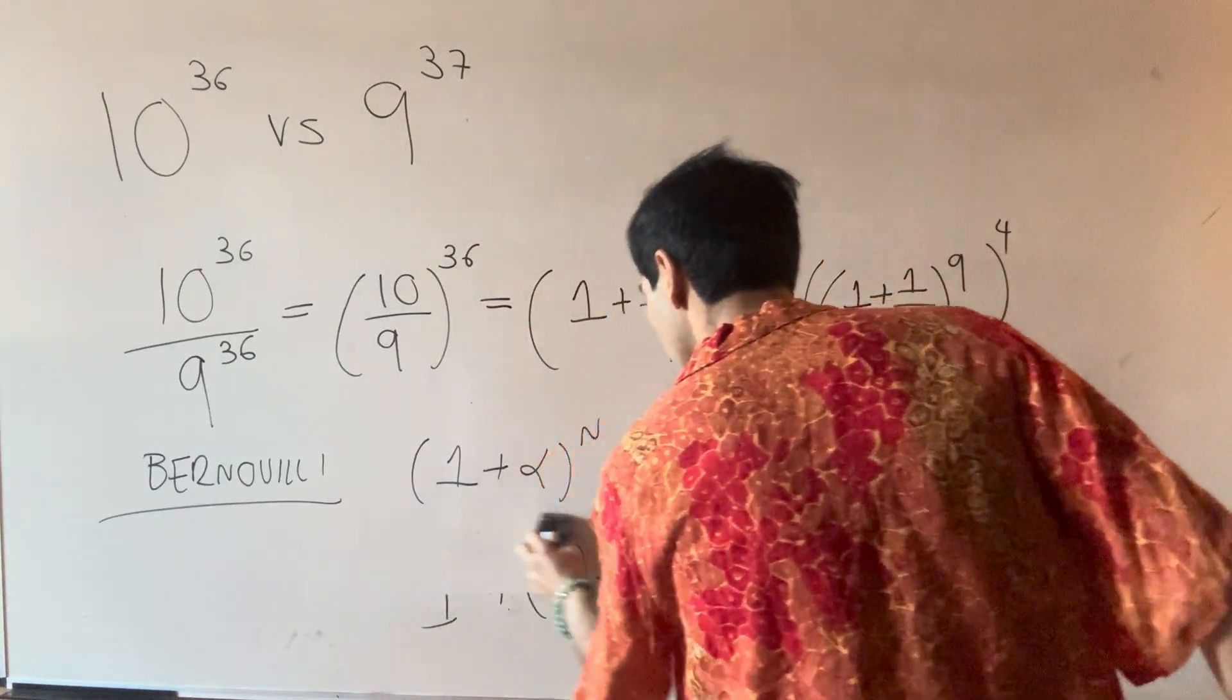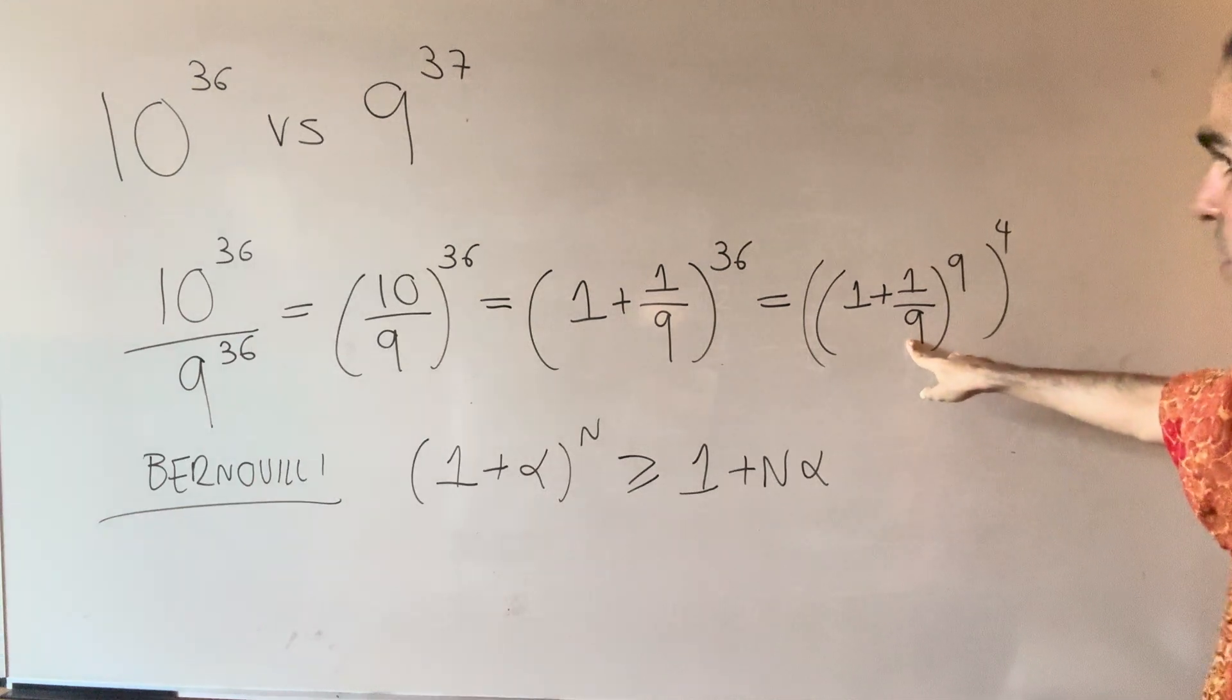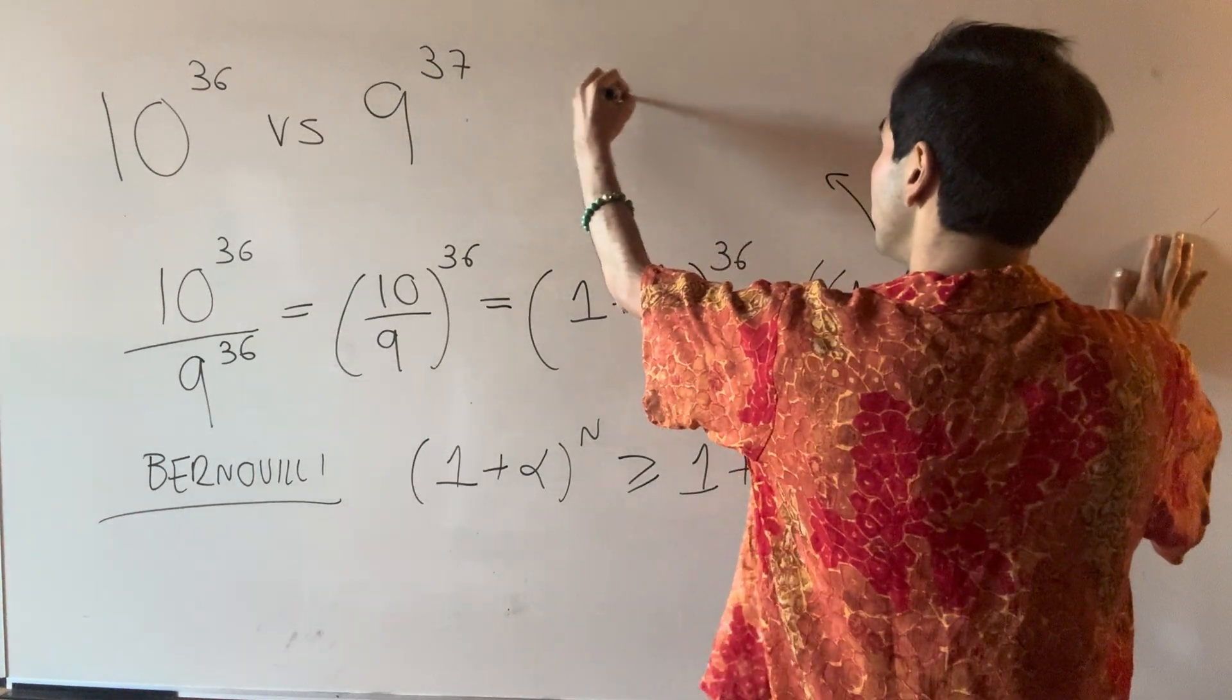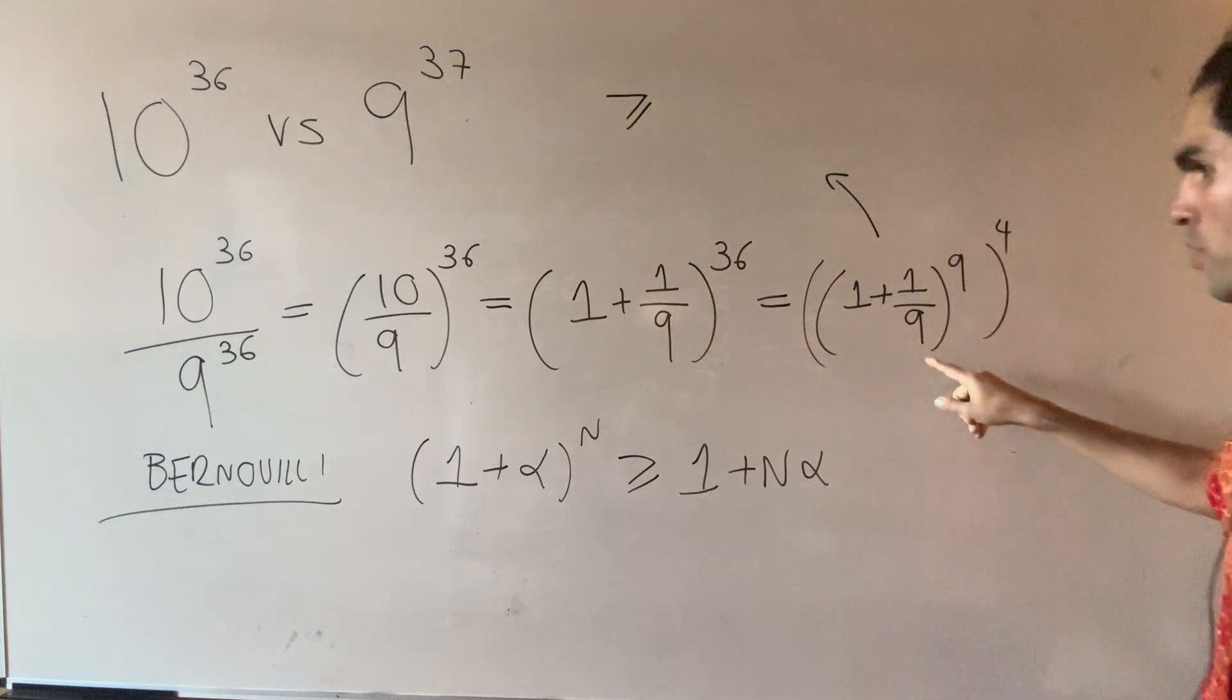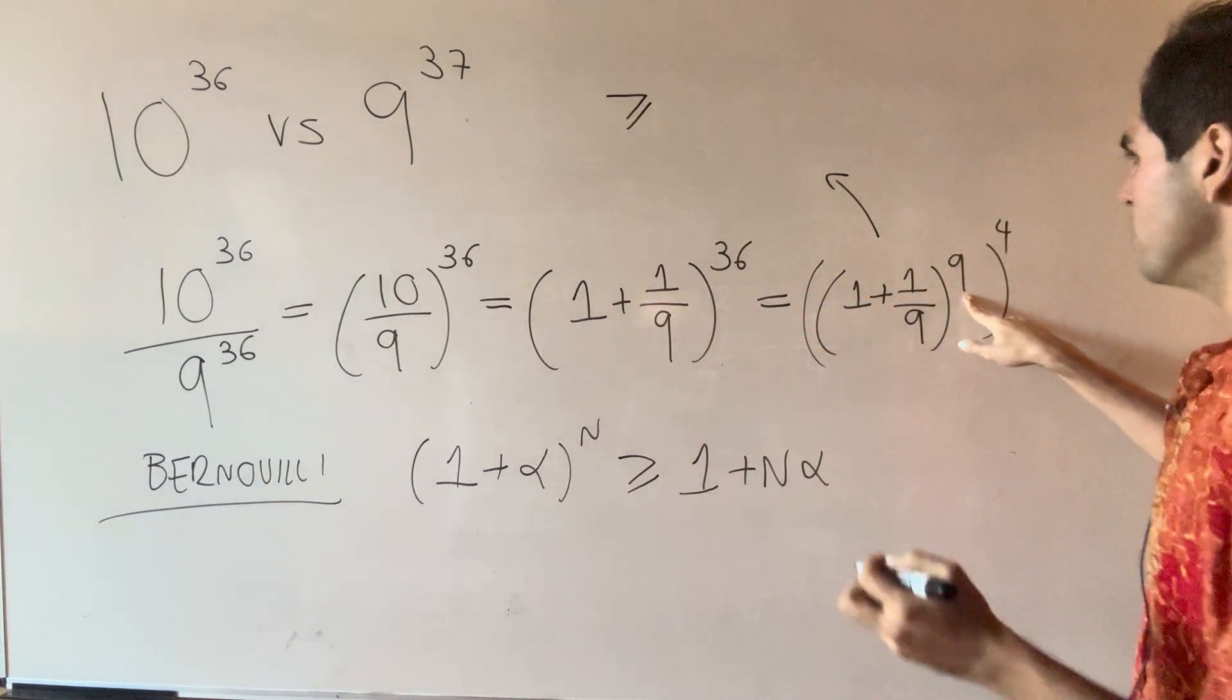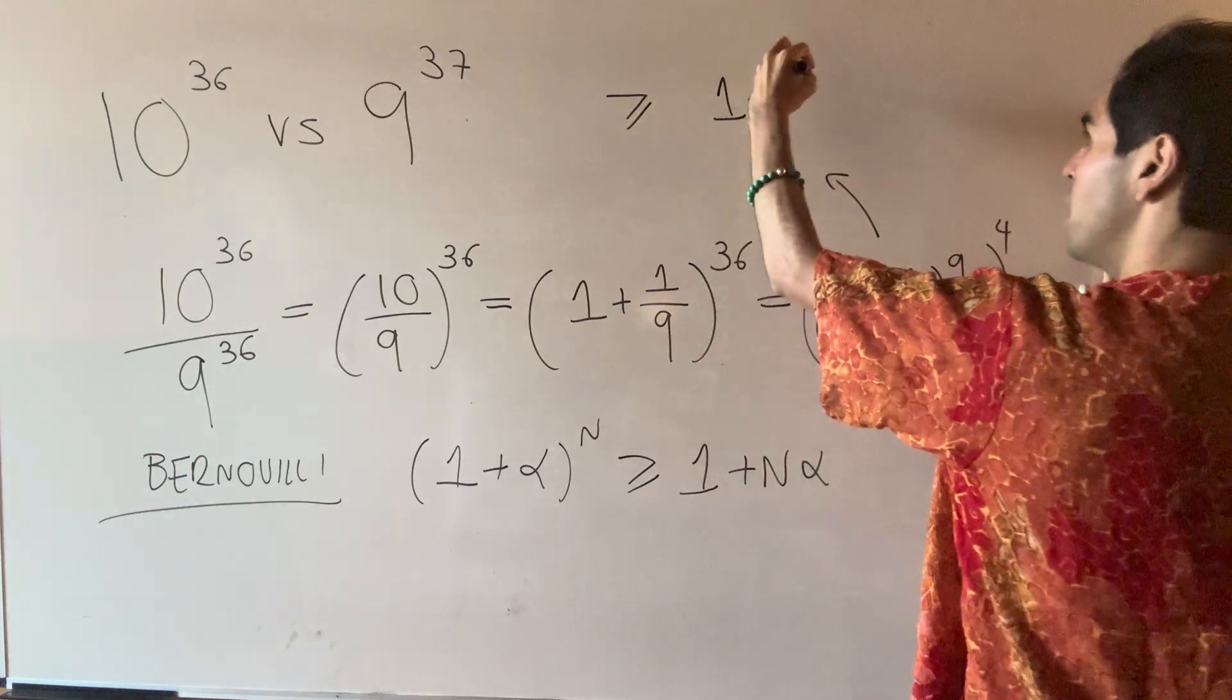Well, using Bernoulli's inequality applied to this, we get that this quantity is greater or equal. So here α is 1/9 and n is 9. So 1 + 9 times 1/9.